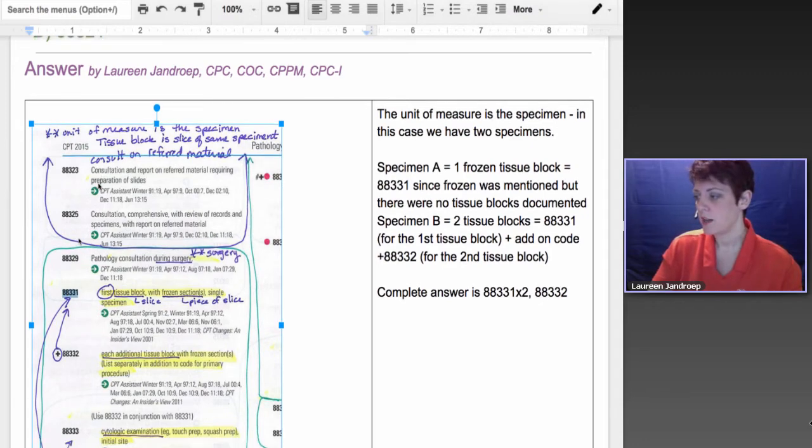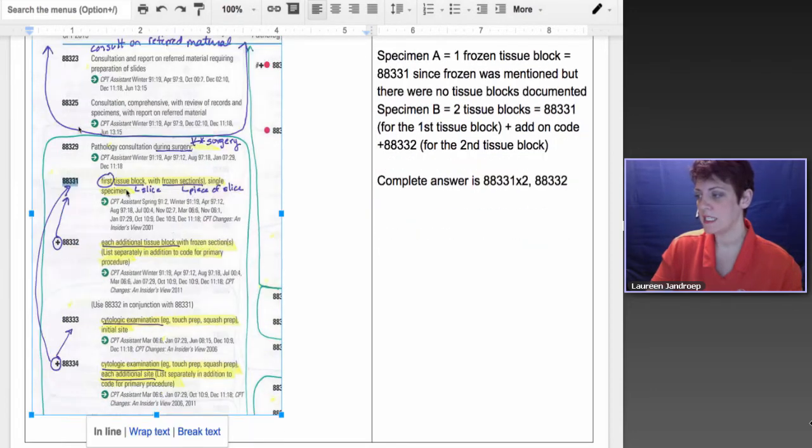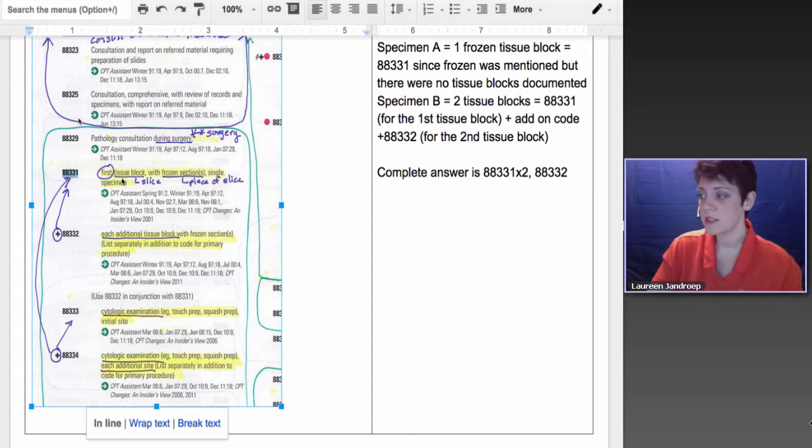Here is my pathology consult bubble starting with 88329. You'll notice indented underneath that 88331 says first tissue block with frozen section, and then we've got the add-on code, each additional tissue block with frozen section. I have the plus sign circled and aiming up at the 331 because if you look at the parenthetical note, it says that 88332 is designed to be used in conjunction with 88331. So you would never have 88332 added onto another code. It has to go with at least one unit of 331.